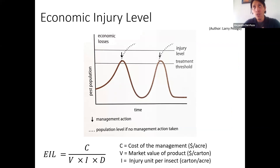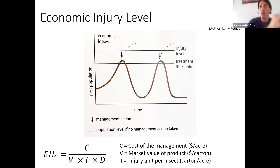This brings back the concept of the economic injury level. We have some tolerance depending on each crop, each market, your situation, and your budgets. You want to have this threshold where you see a density of insects plus the cost plus the price of the product. You can see the formula, but the concept is: I don't want to reach that point. That's why we want to scout and do preventative interventions so we don't reach economic damage and lose profit.